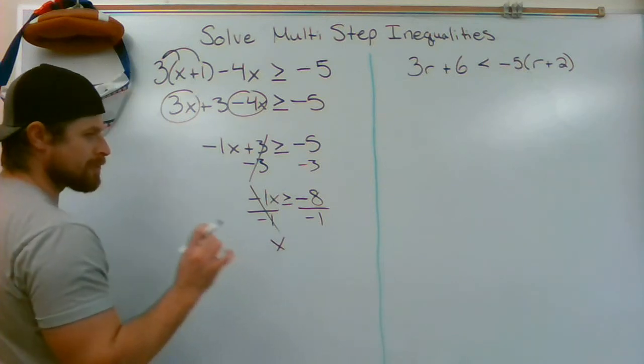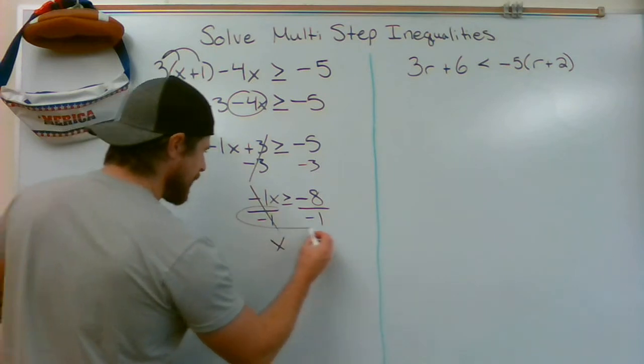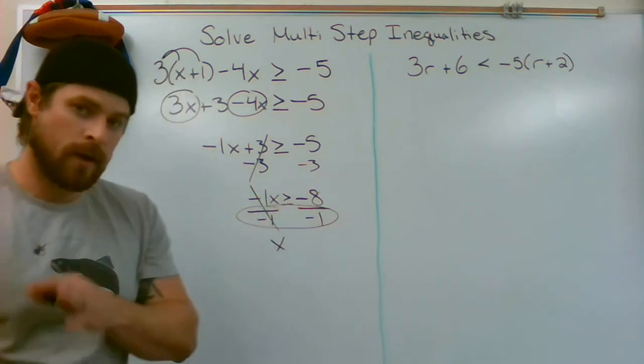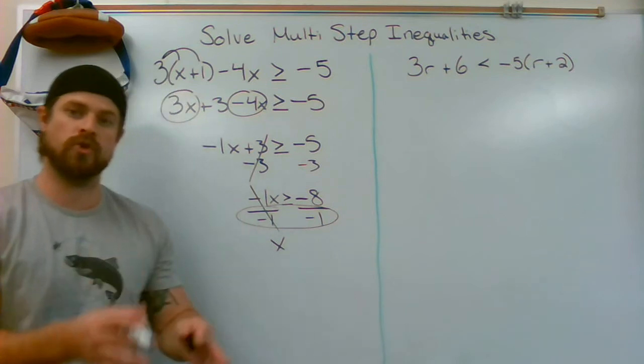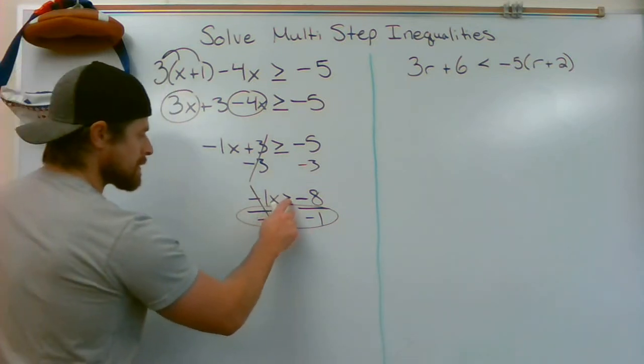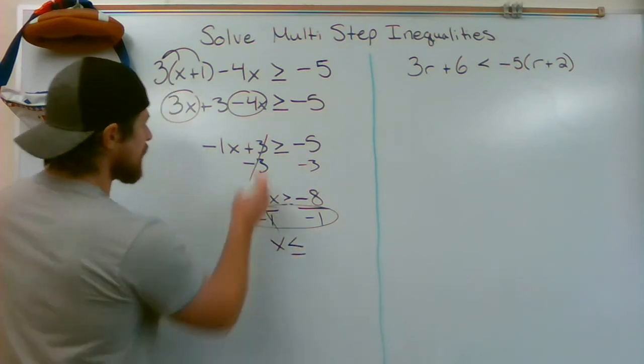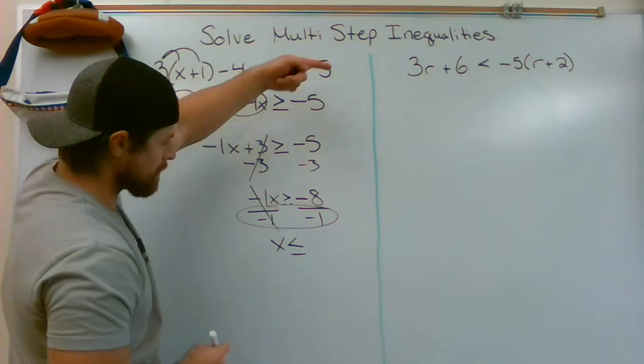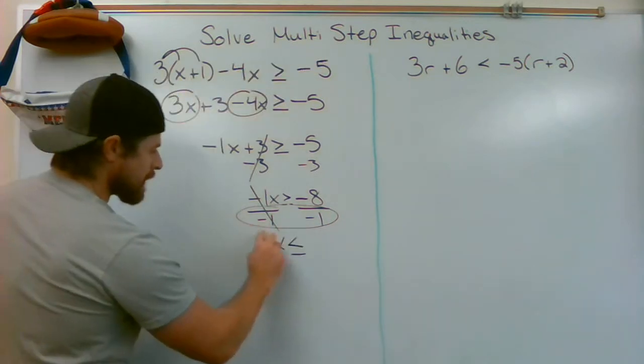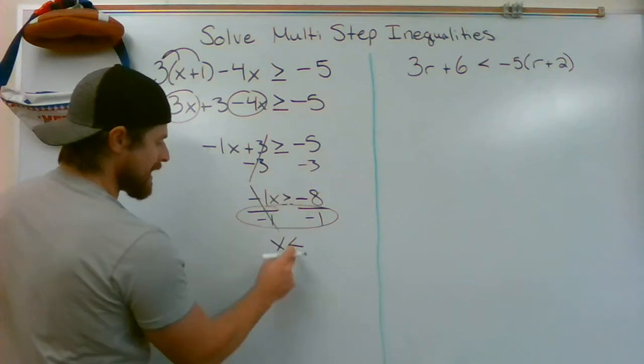Now pay close attention here. Because I divided by a negative, if you need to multiply or divide by a negative when using inverse operations, your symbol will flip. This entire time, the arrow's been pointing to the right. This last and final step, because I divided by a negative, I'm going to flip that sign.